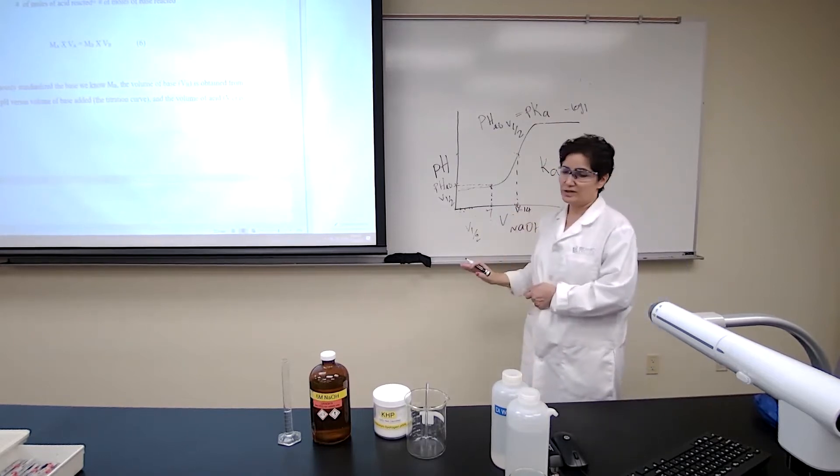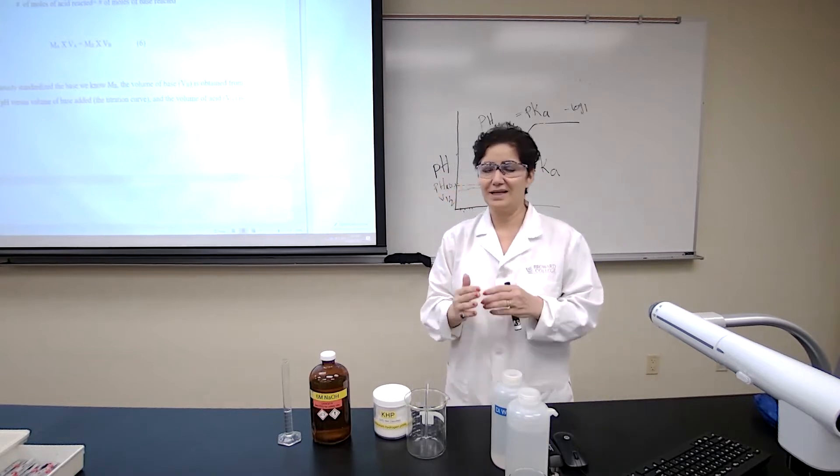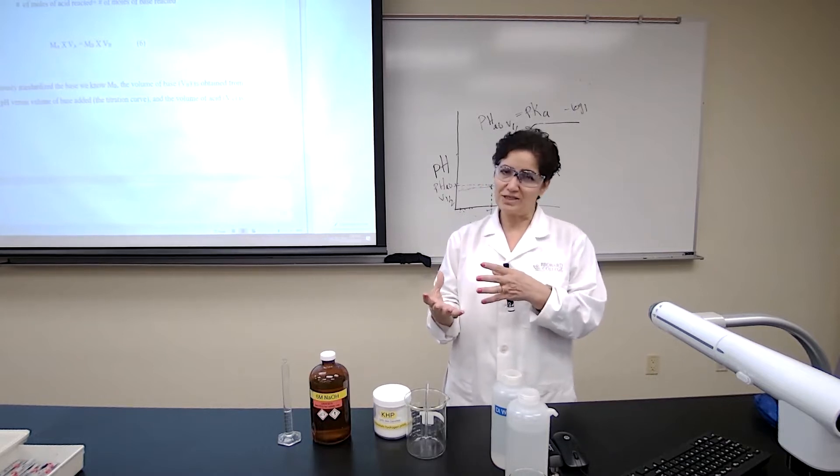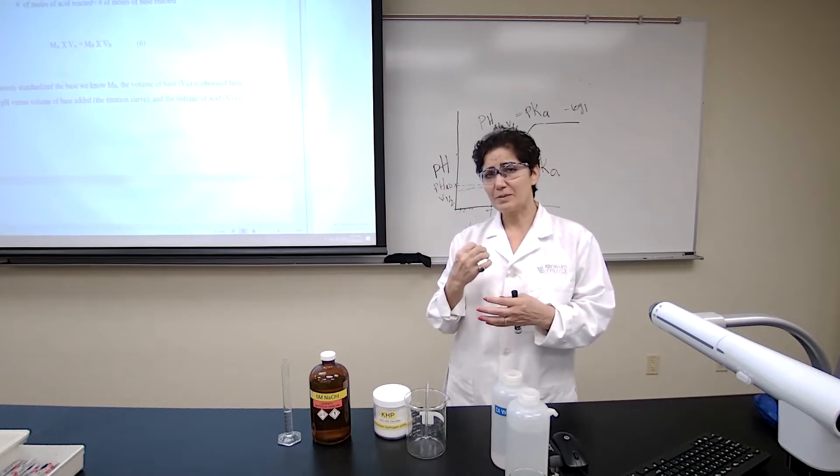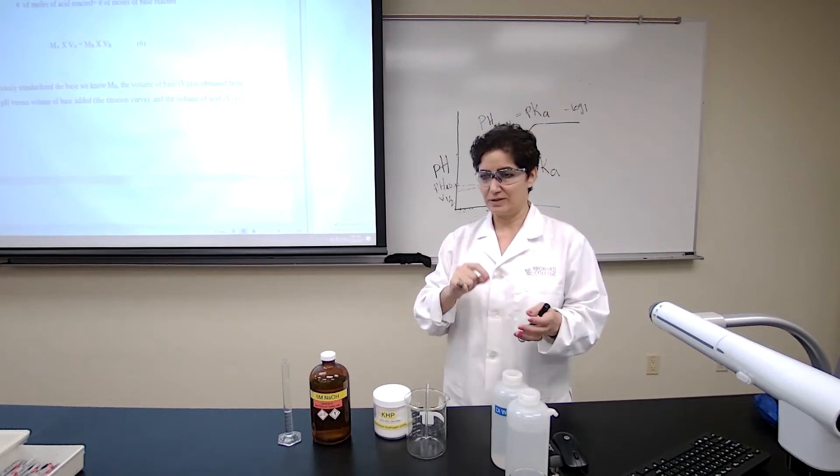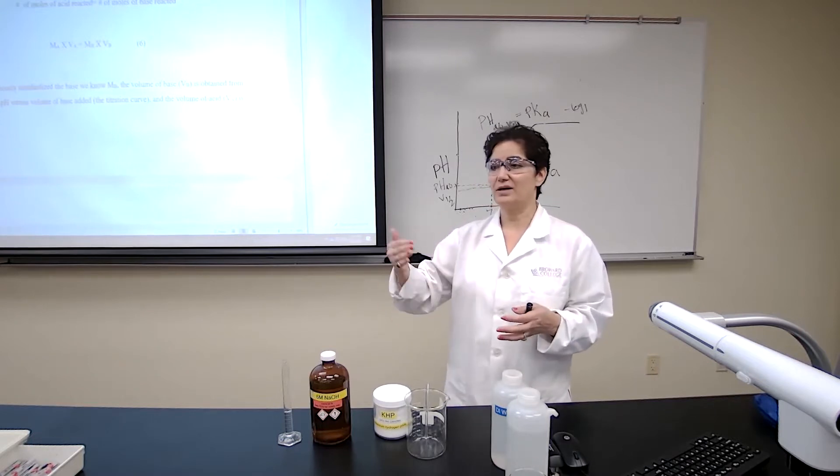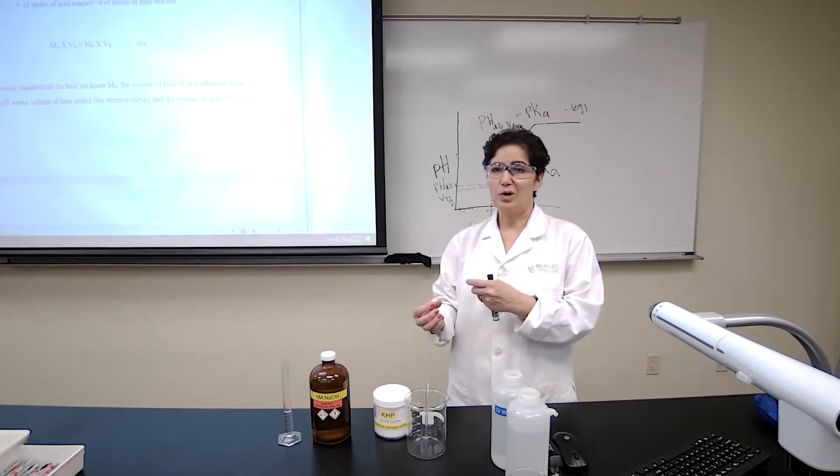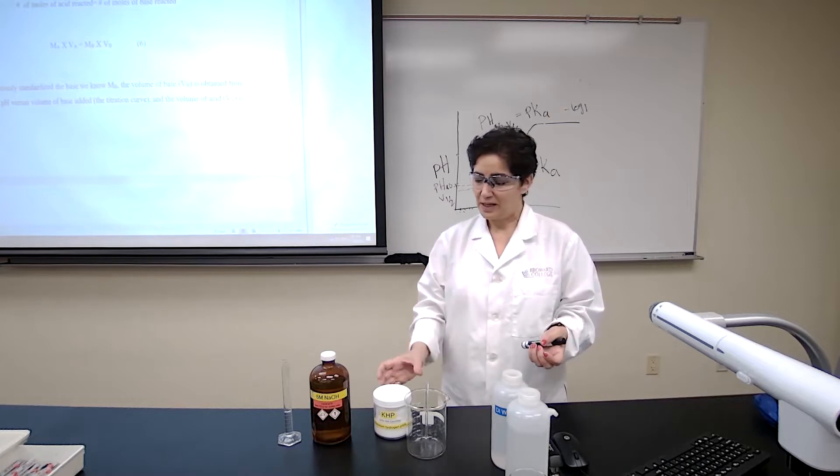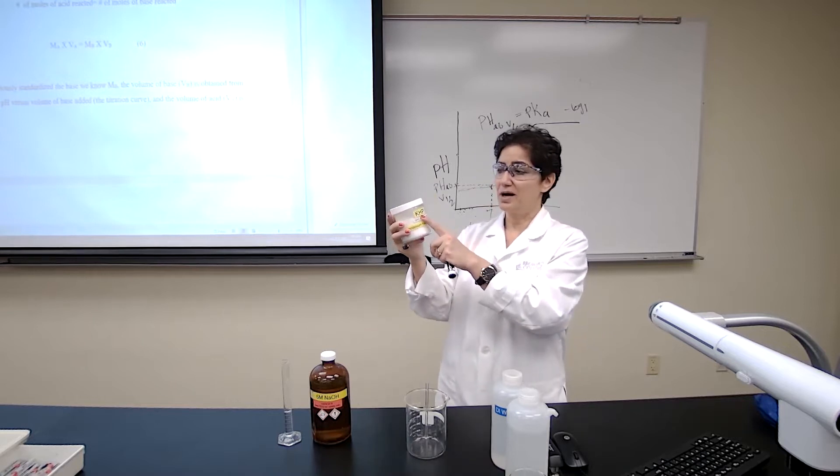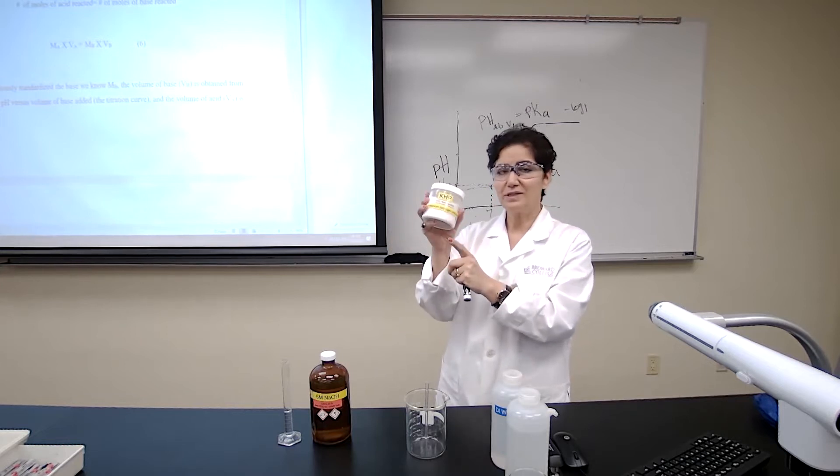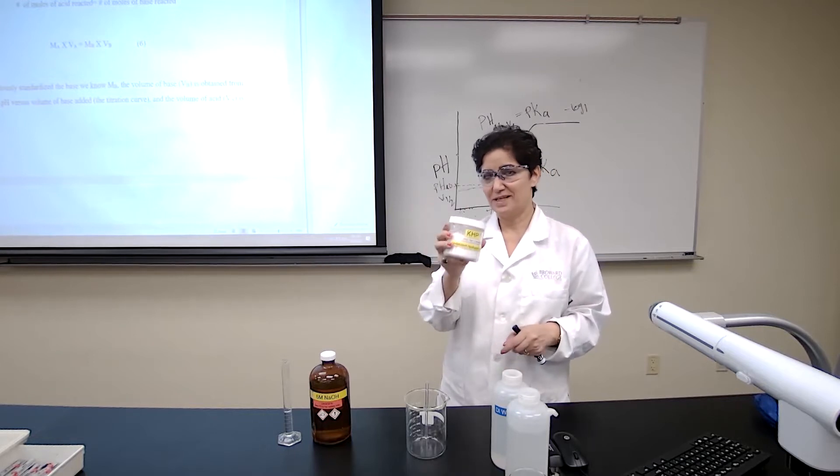So we are using sodium hydroxide. Sodium hydroxide is a secondary standard. It cannot count as a primary standard because sodium hydroxide pellets act as a kind of anhydrous agent and they absorb moisture easily from the environment. So by the time I measure the mass of those pellets and bring it and try to make the solution, the mass is changing. So I cannot trust the concentration of sodium hydroxide that I prepared using the solid sodium hydroxide. I'm using KHP, potassium hydrogen phthalate. The abbreviation for this acid is KHP. I'm using this as a primary standard. KHP doesn't have the problems that sodium hydroxide has.